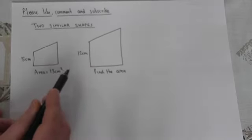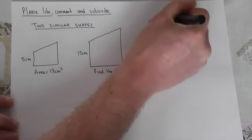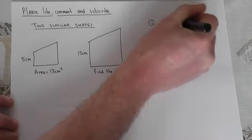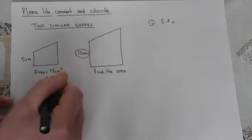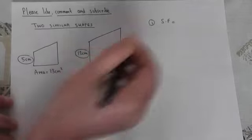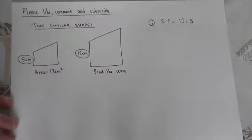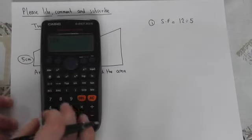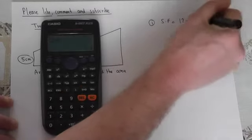Now the golden rules to find the new area are as follows. Number one is to find the scale factor. To do that we divide the new side by the old side. So we do 12 divided by 5. For clarity, 12 divided by 5 is just 2.4.